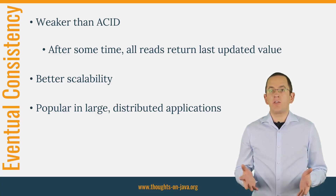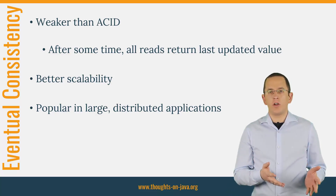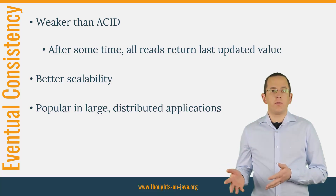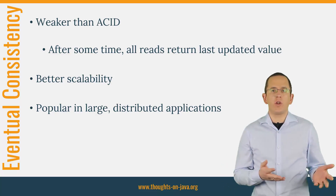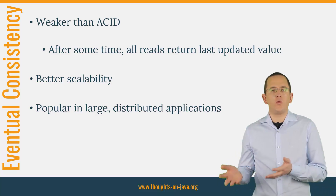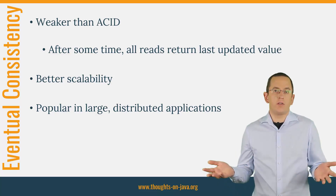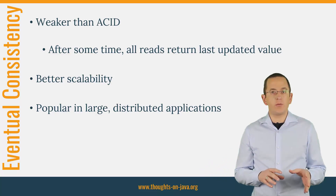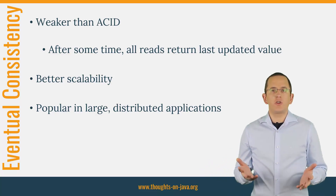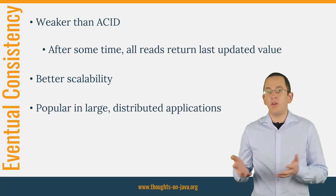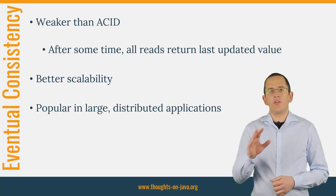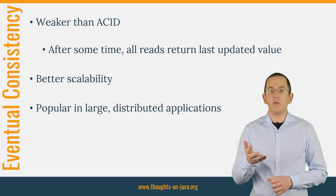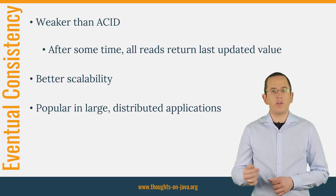For example, it isn't a problem if the reviews in an online bookstore are updated in an eventually consistent way. When you look at a book, it doesn't really matter if you see 100 or 101 reviews. But that's not the case for the inventory when a customer places an order. You should be sure that you can fulfill the order before the customer pays for it. So you probably need an ACID transaction or another way to ensure that you use the correct data when processing the order.